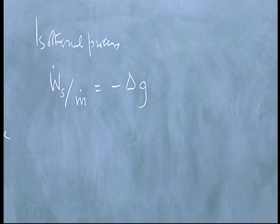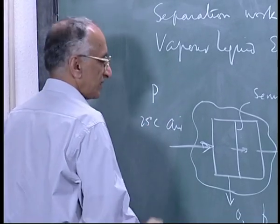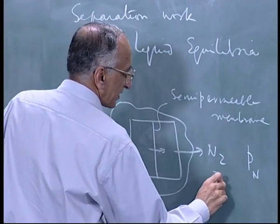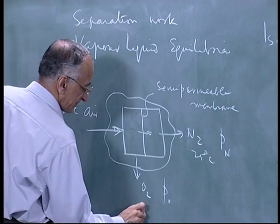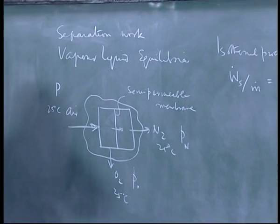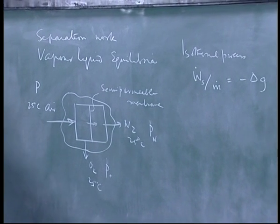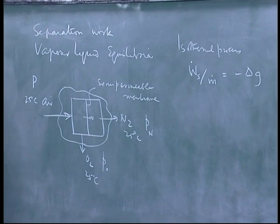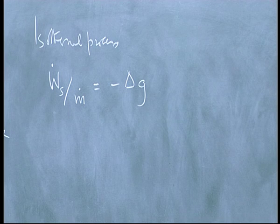What happens inside is immaterial. This is at 25 degrees. This is at 25 degrees. All I want to do is calculate how much work I have to do to separate air into oxygen and nitrogen.